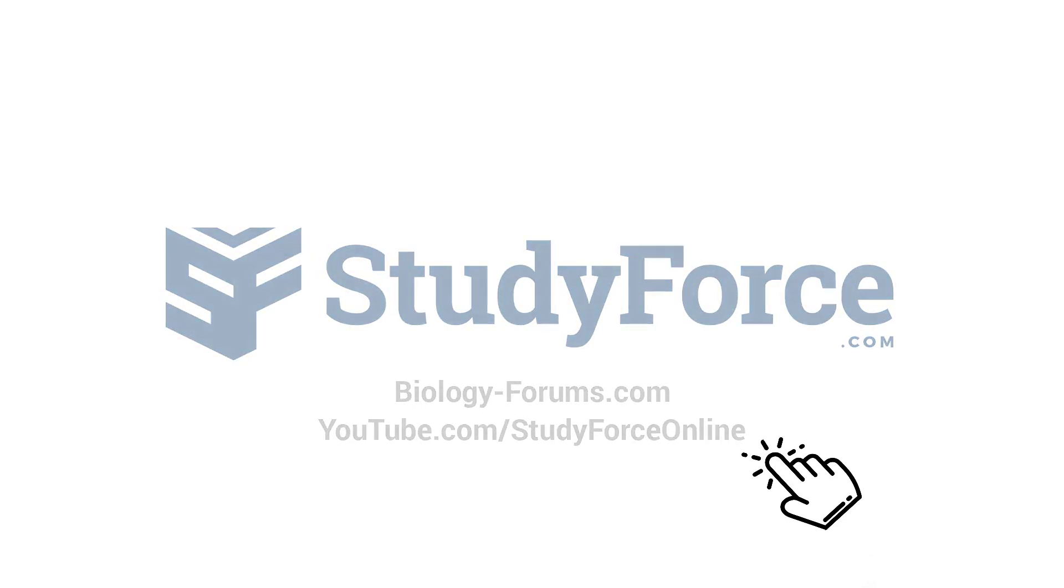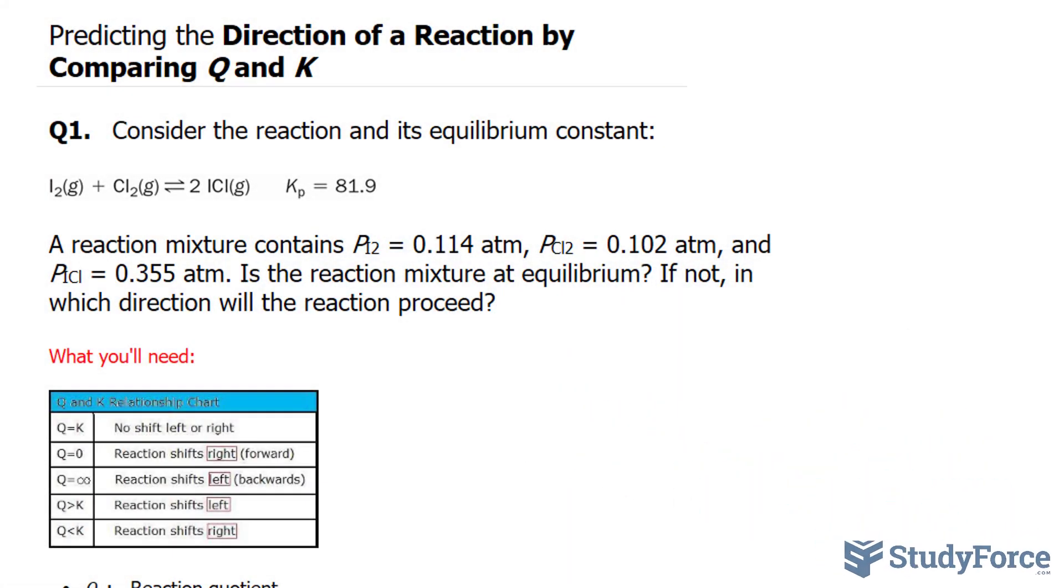In this lesson, I'll show you two examples on how to predict the direction of a reaction by comparing the reaction quotient and the equilibrium constant.